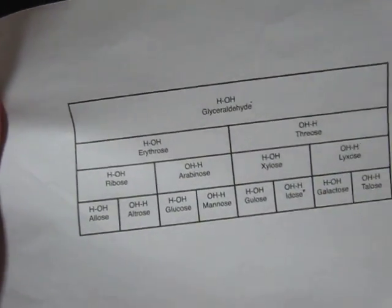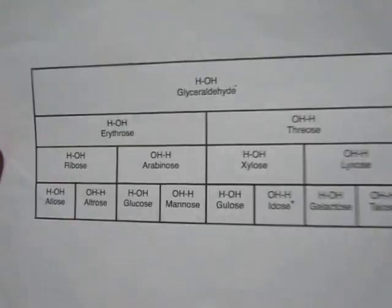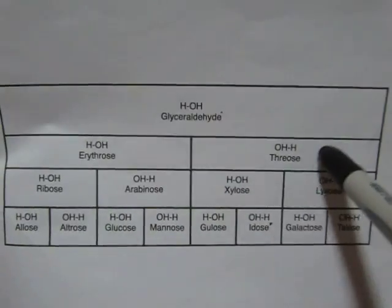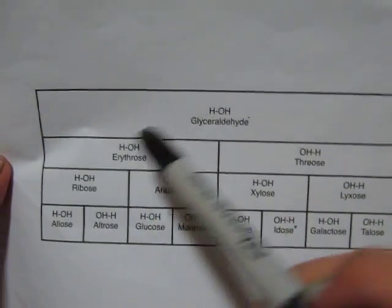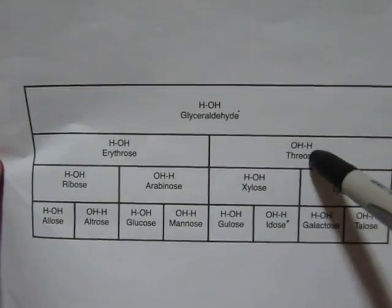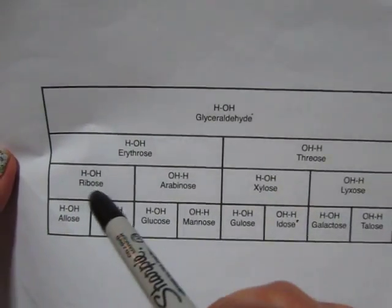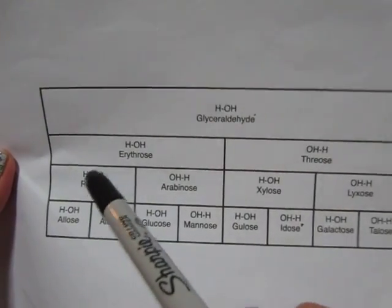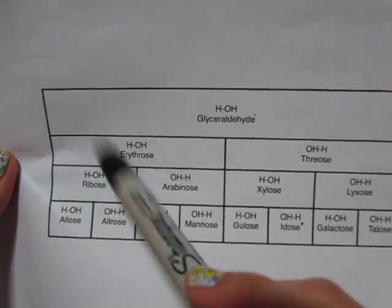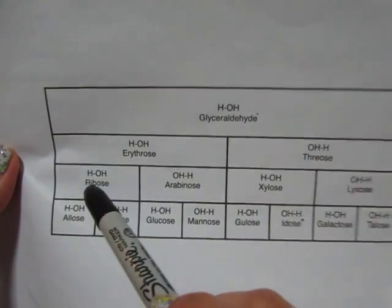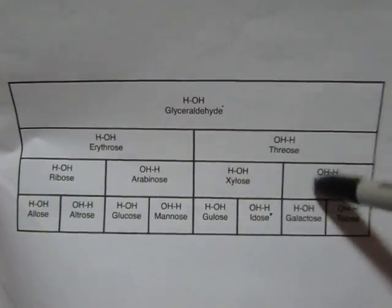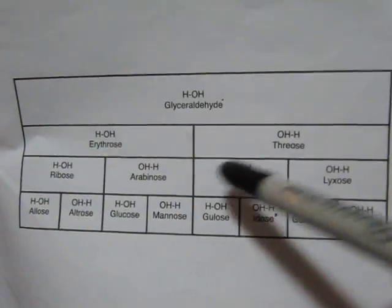To memorize the names: on the second row it is alphabetical — E before T, so erythrose will be on the left side and threose on the right side. On the third row it's anti-alphabetical — ribose first. So it's anti, not like the second row. The third row goes: ribose first (R), then arabinose.